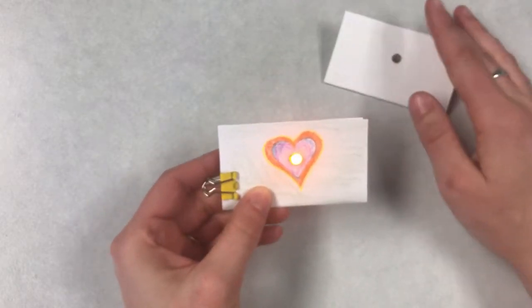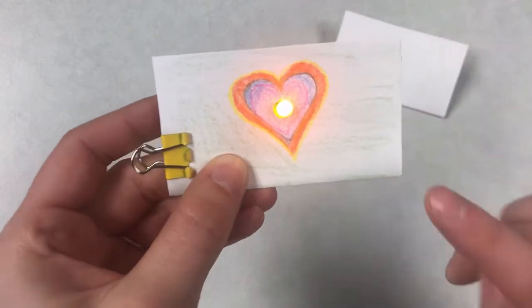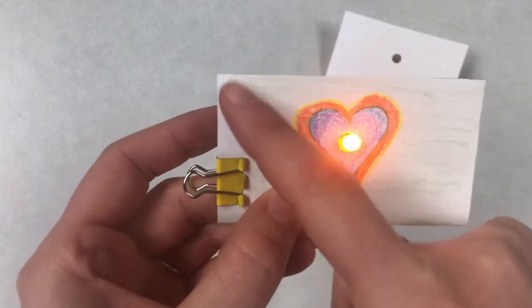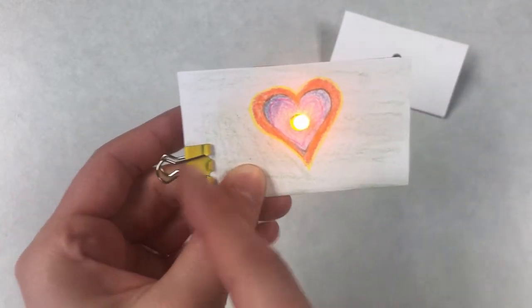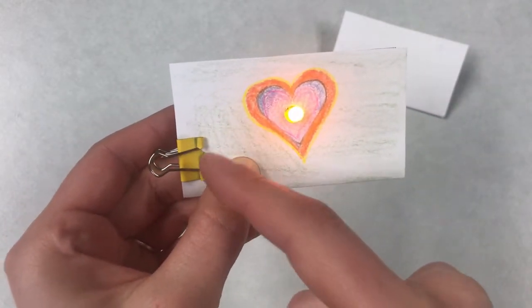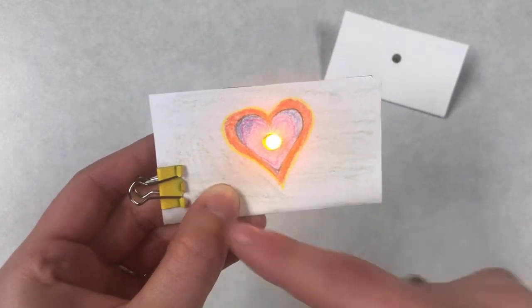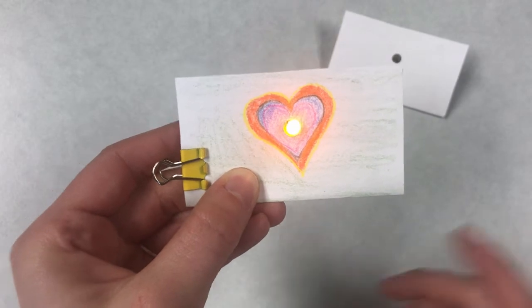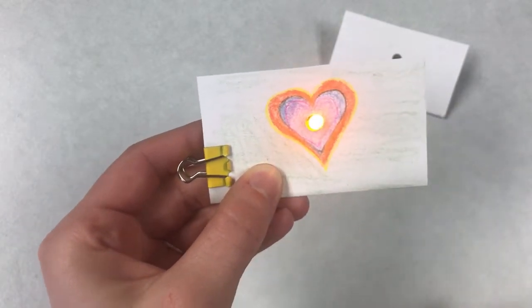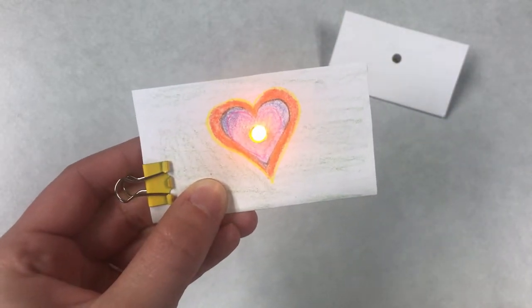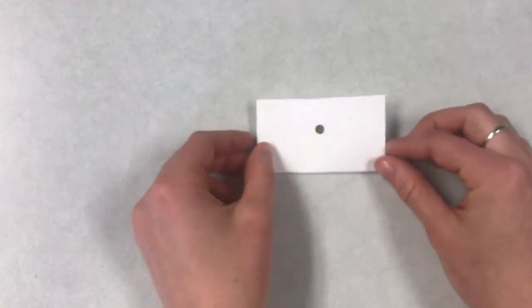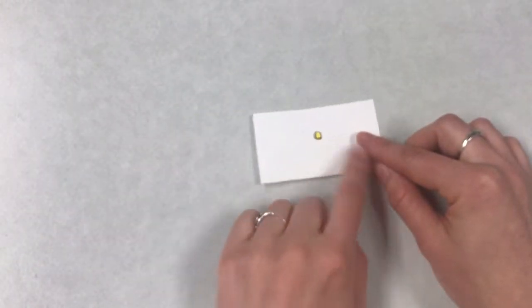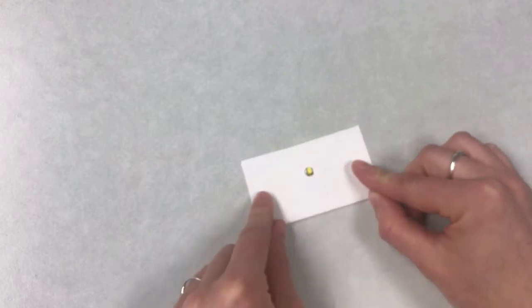When you're drawing on your card, you want to remember that maybe you don't want to draw very much on the edges because your binder clip is going to go right here and cover up anything that you draw there. So you want to keep your drawing in the center and around where that light bulb is going to shine through. The very first thing that you want to do is decorate your card, make a drawing on your card.